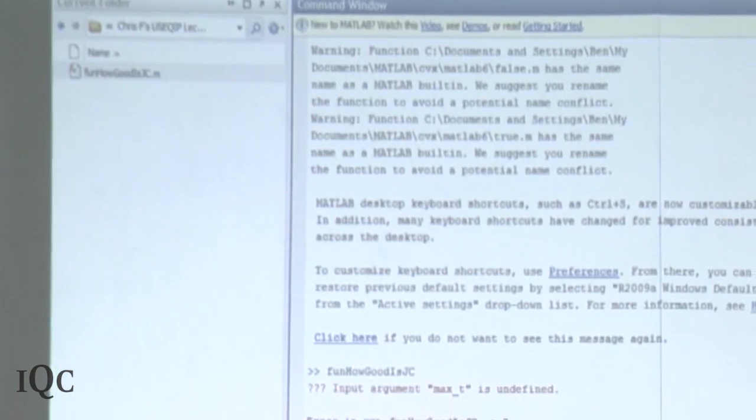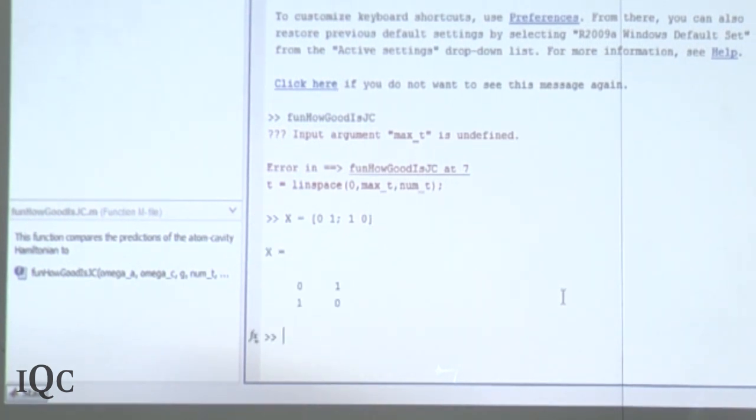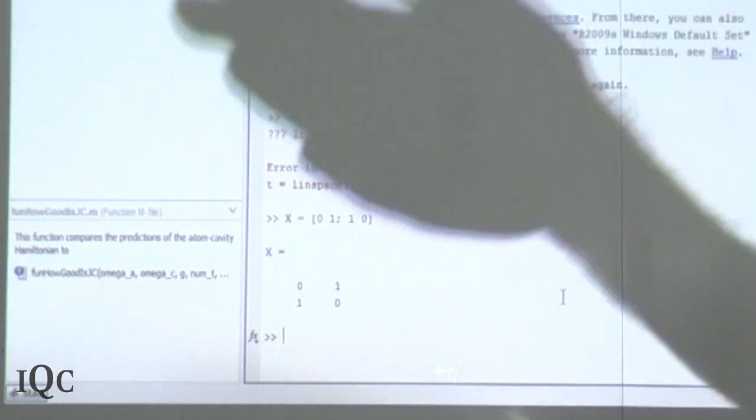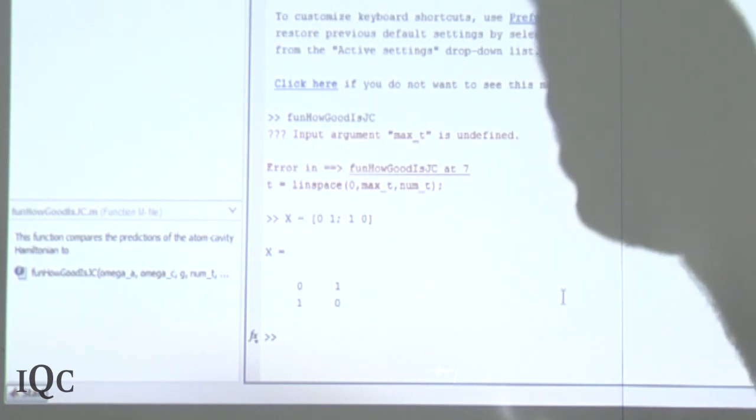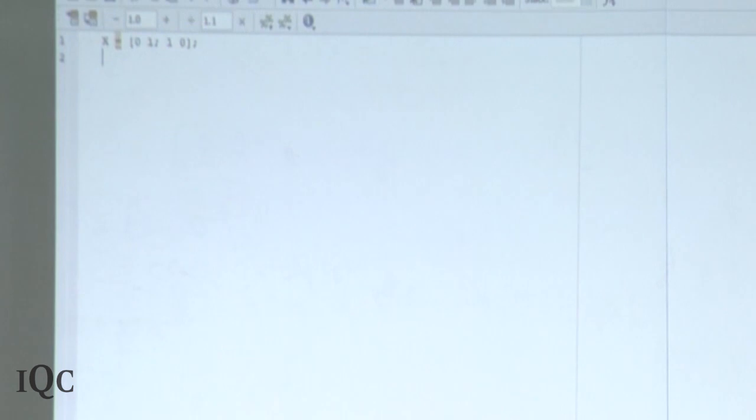So, we had our Hamiltonian with these matrices that were constant. Let's create those. I have this X matrix. Just to be clear, I'll show you what MATLAB is doing. I create rows by writing what's in the row, and then I separate the rows with a semicolon.